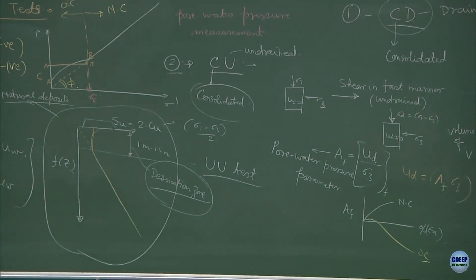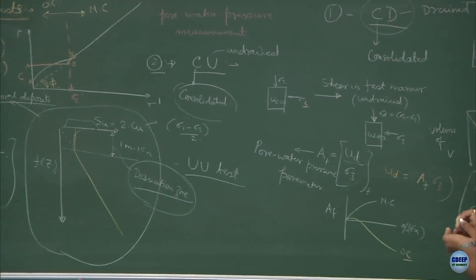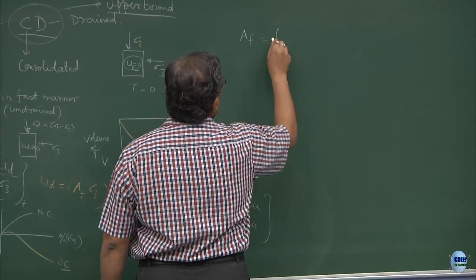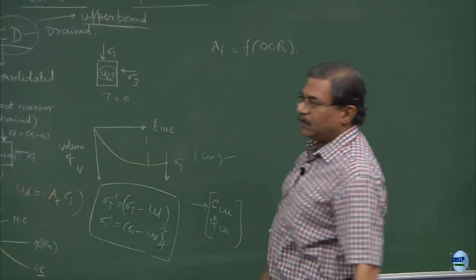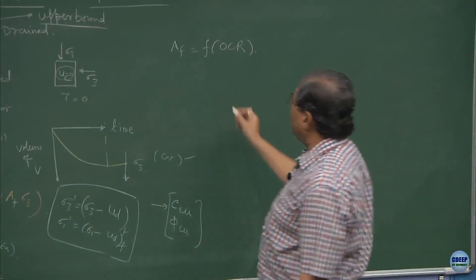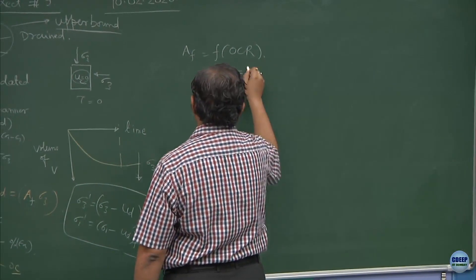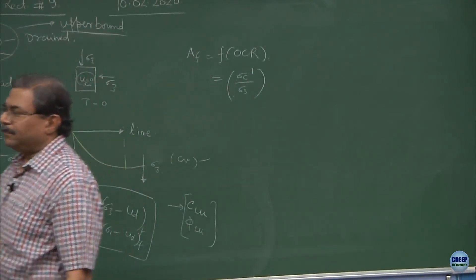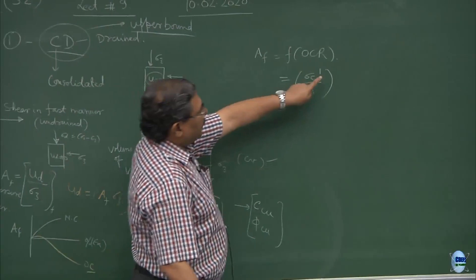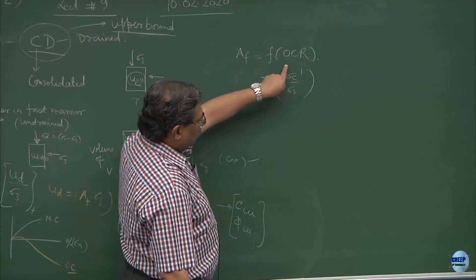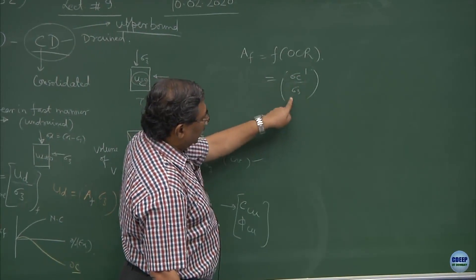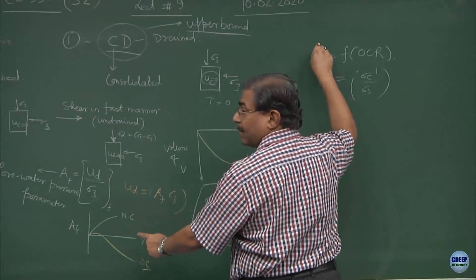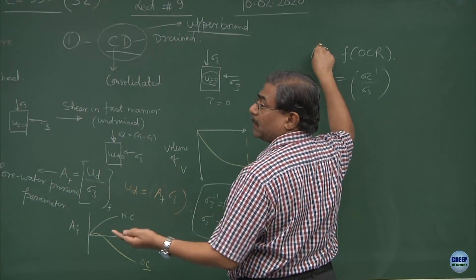Ultimately, we are going to use these parameters to classify the soils. We will link this A_f with OCR, over-consolidation ratio, and we will define this OCR as the sigma c prime over cell pressure. We will correlate this and characterize the soil whether it is OC response or NC response.